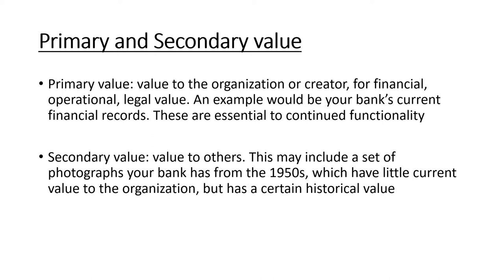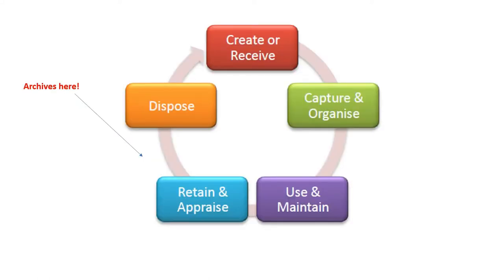Another example: a letter that a soldier writes to his wife from the trenches in World War One. The primary value is from the soldier to his wife, but the secondary value might be to a military historian studying it for reasons beyond which it was created. This is one of the things I love about archives — anything could be considered archival that might not have been obvious to the creator. It's worth noting that very few records ever make it into an archive, and there can sometimes be something random about it.